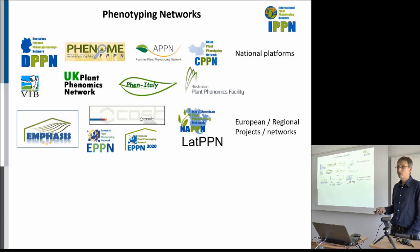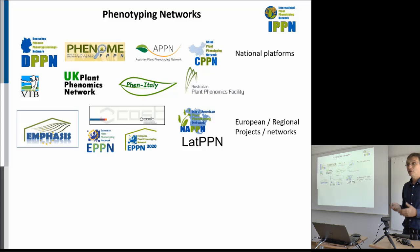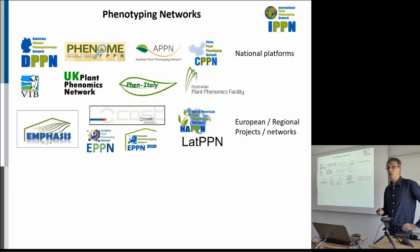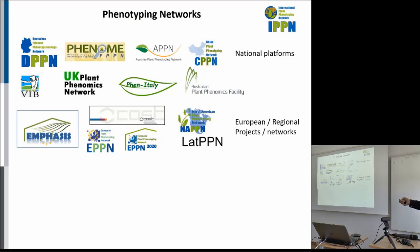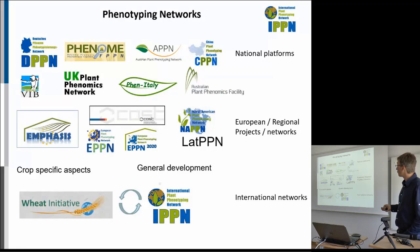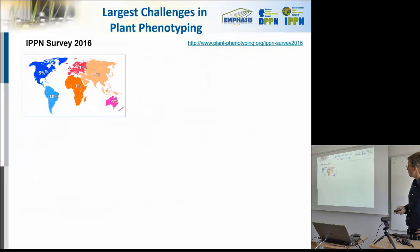Beyond the national level, there are also activities like EPPN and EPPN 2020 at the European level, providing access to users and different groups for phenotyping infrastructure. There is also a project called Emphysys, which aims at long-term sustainable development of pan-European infrastructure to make it available across Europe. And of course there are the North American Plant Phenotyping Network, the Latin American Phenotyping Network, plus activities on a global scale related to specific crops — like the WIT initiative and IPPN — to bring all those players together.